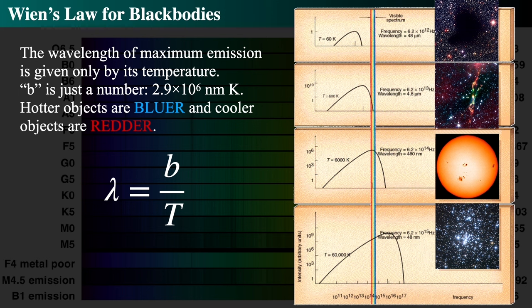If we look at extremely cool objects in deep space, such as dark molecular clouds, they'll be peaking way out in the infrared and their temperatures will be very low, emitting mostly at long wavelengths. When we go up to solar-type objects, temperatures are relatively high at about 6,000 Kelvin, and wavelengths are roughly around 5,000 angstroms — visible light. For extraordinarily hot objects such as X-ray emitters, they emit primarily in the X-rays or far ultraviolet, with very short wavelengths and very high temperatures.